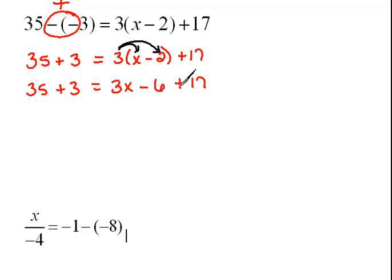So I would recopy my problem doing the distribution. 35 plus 3 equals 3 times x is 3x, 3 times negative 2 is negative 6 plus 17.